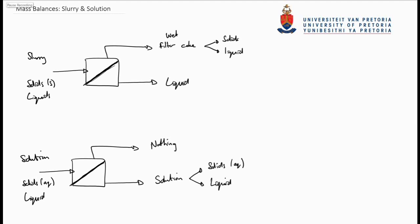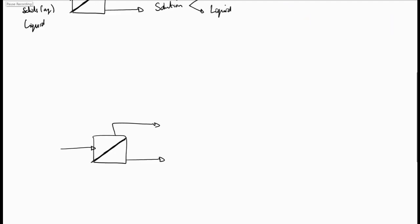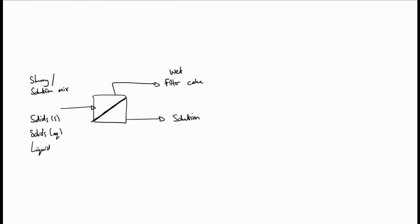Let's now take another example of this system, but as a combination. A mixture of a slurry and a solution is fed to the filter, passing through the filter and leaving a filter cake at the top. The filter cake is made up out of the solids and is wet with the solution, with the solution being made up out of dissolved solids and the liquid. The same applies for the solution passing through the bottom of the filter press.